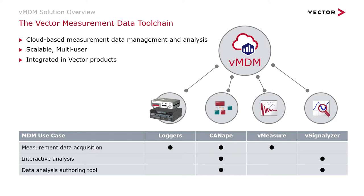Now let's have a quick look at the data flow. If you work with Vector loggers or tools like Canopy or V-Measure Expert, you can start uploading measurement files to VMDEM immediately and automatically after doing the measurement. You can also upload from Windows Explorer or via the VMDEM batch client. Filtering, searching and downloading of measurement files from the VMDEM backend is done with the VMDEM Explorer in Canopy and vSignalizer. The data analysis, data mining and report generation functions that should be executed in the VMDEM cloud are designed and tested locally in Canopy or vSignalizer, and the porting from desktop to cloud is done with a simple mouse click.